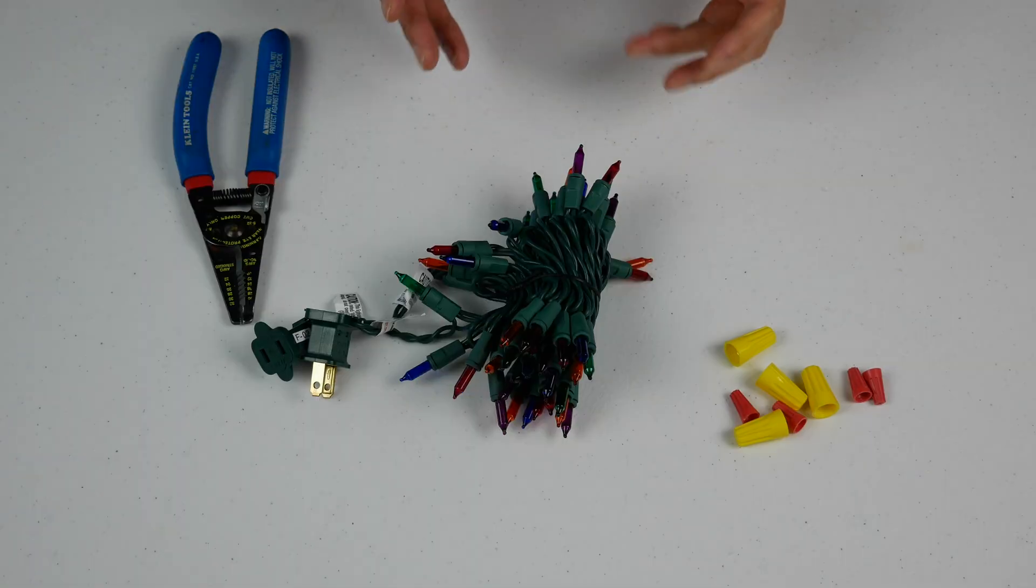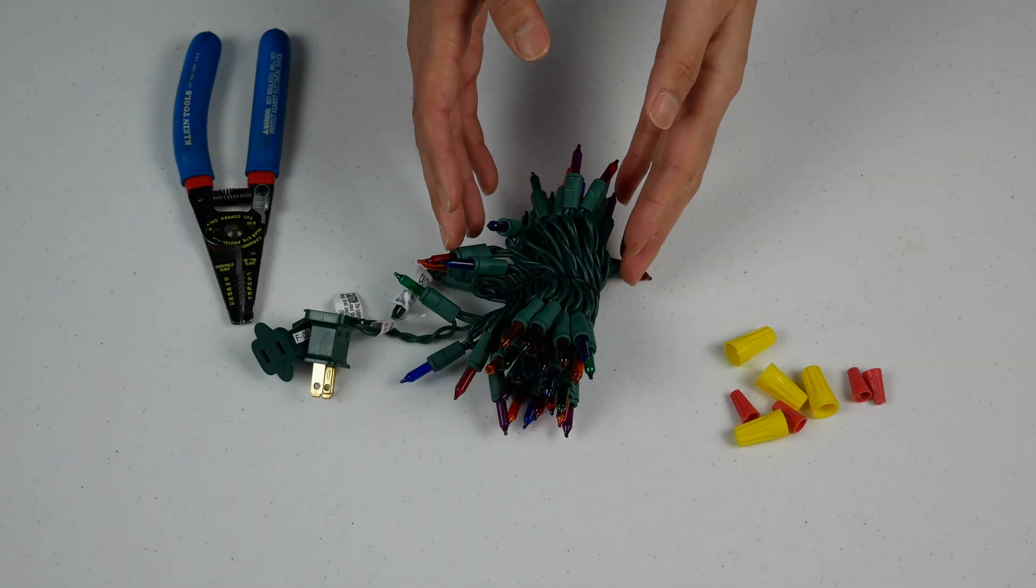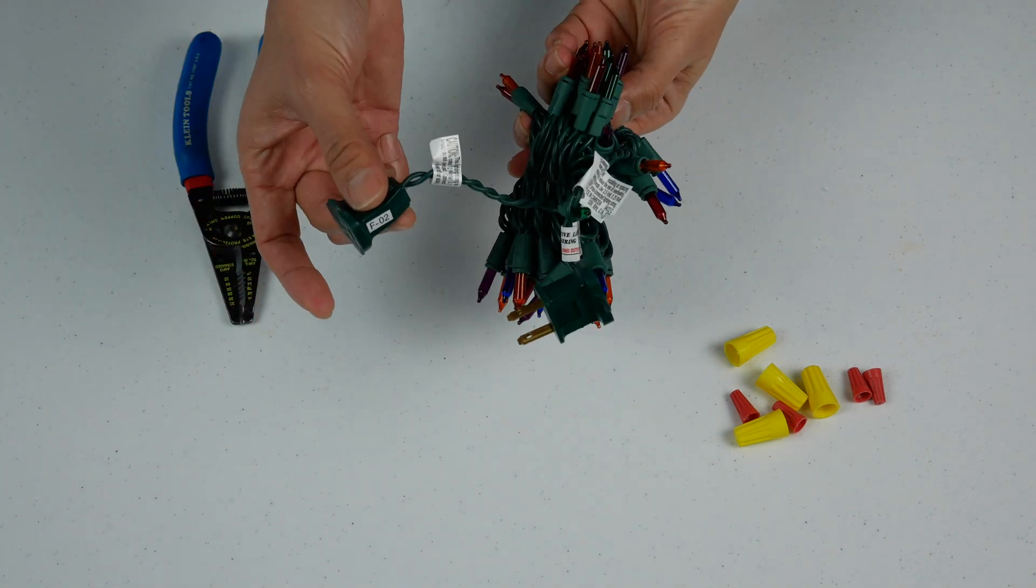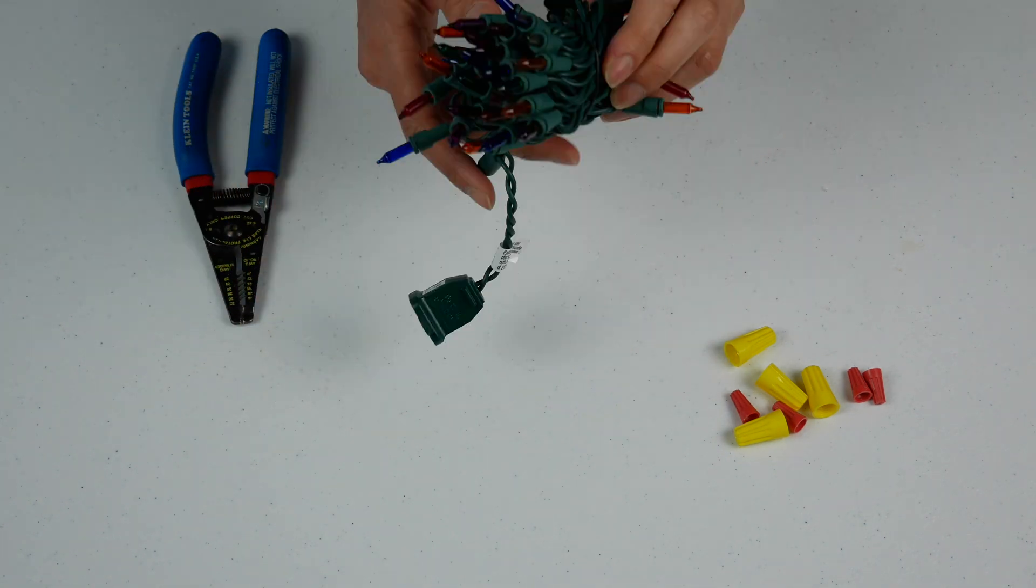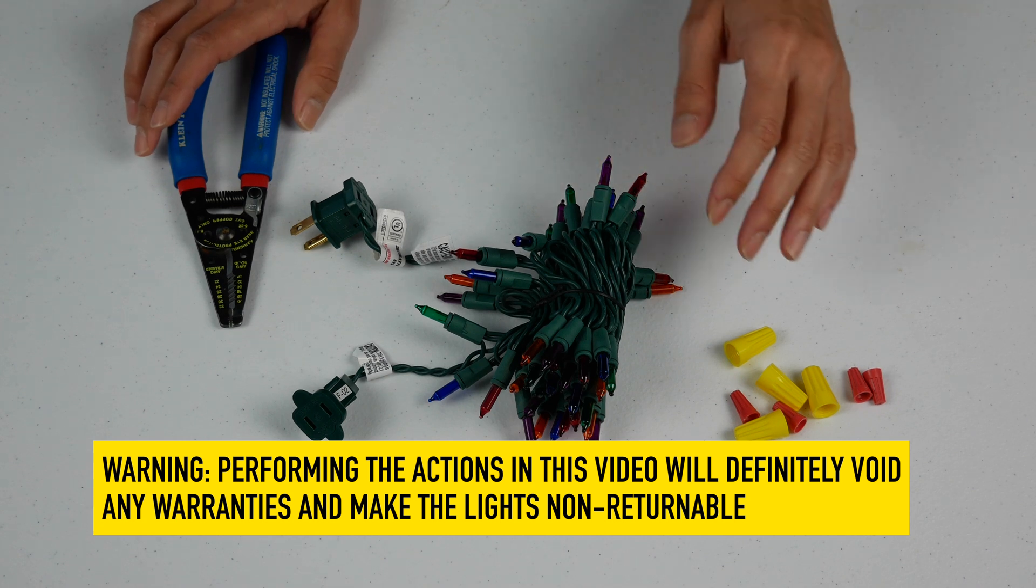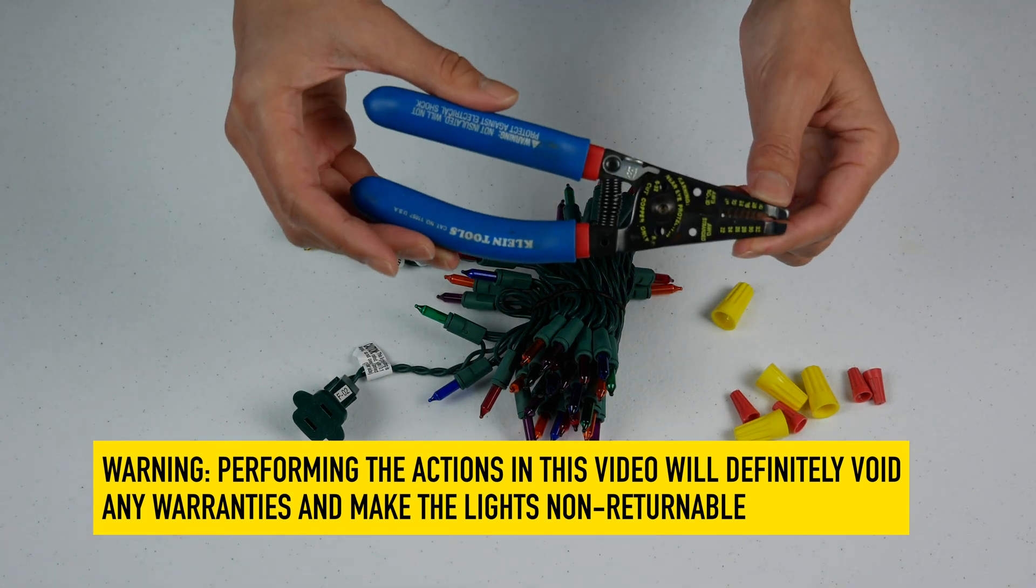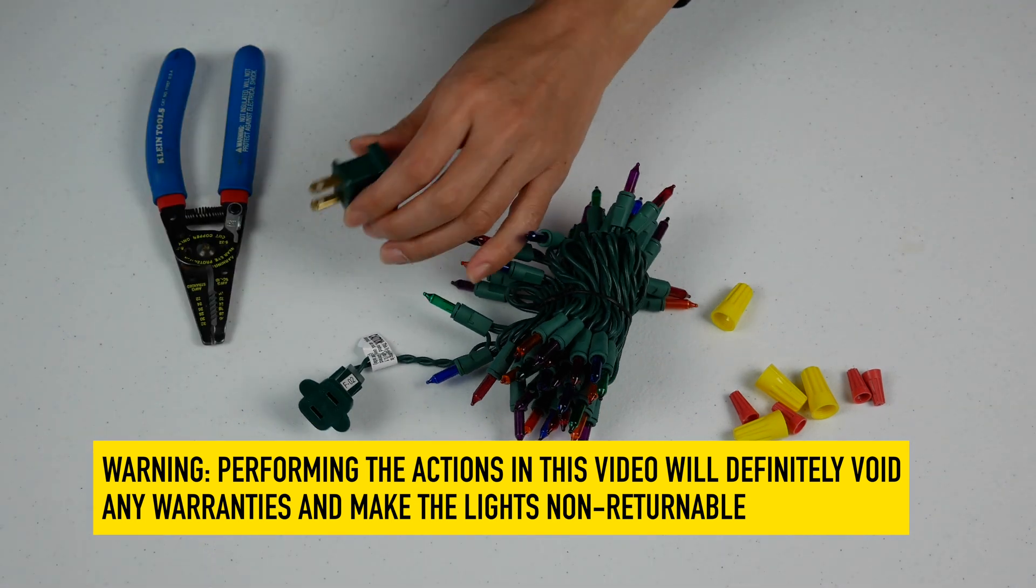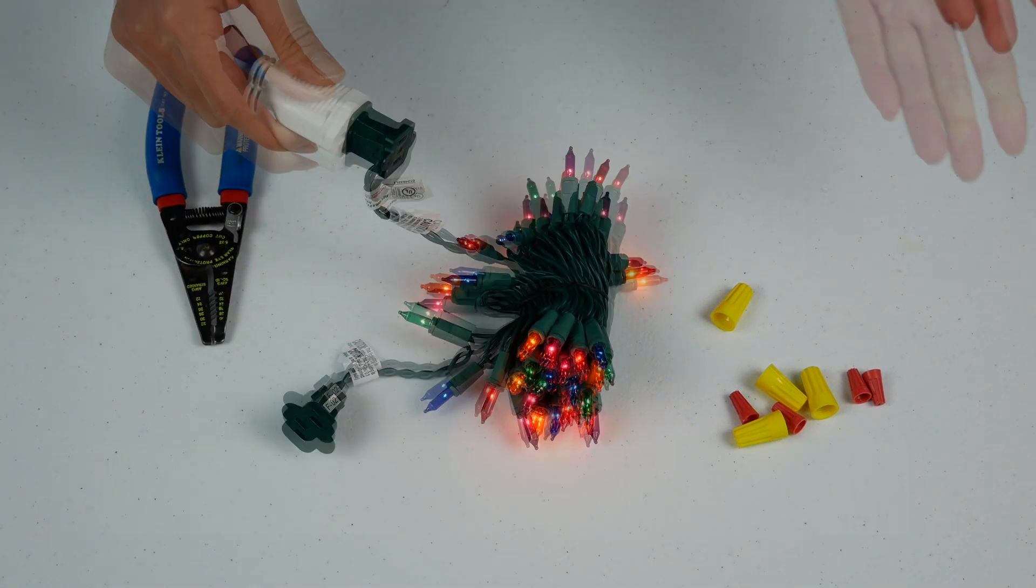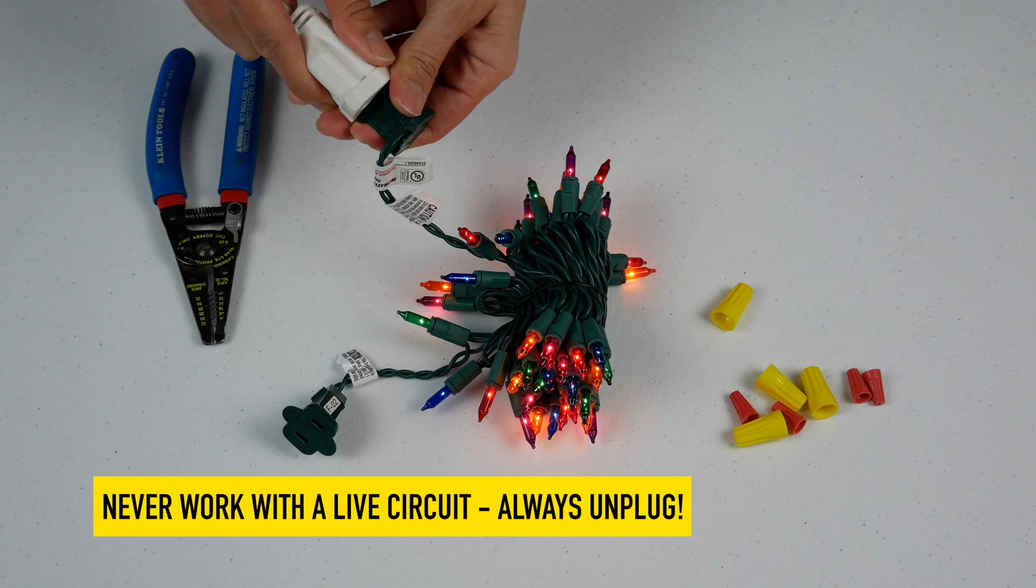Hello, in this video I'm going to shorten these Christmas lights and remove the top plug from this strand of lights. What I'll use in this project are some wire nuts and my wire cutter wire stripper. First of all, let's plug in the lights to make sure that they work. Excellent, they work. Now I'm going to unplug them, so always have your lights unplugged while you're doing this project.